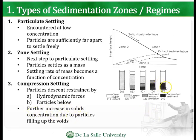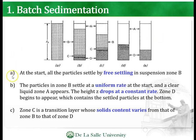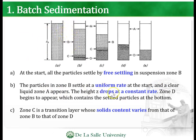Further increase in solids concentration occurs due to particles filling up the void space. Some of the liquid still entrained in the interstices is able to escape, and the solids become further compacted. To illustrate: at the start, all particles settle freely by free settling where time is zero and height is z₀. The particles remain in suspension and the clarified zone forms. Particles in zone B settle at a uniform rate, and the clear liquid zone A appears while height z drops at a constant rate.